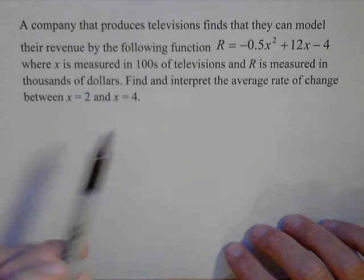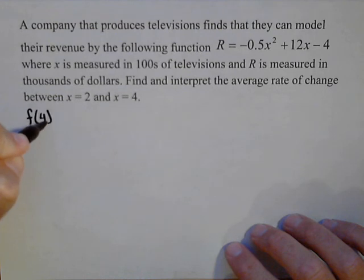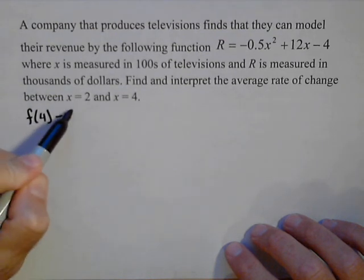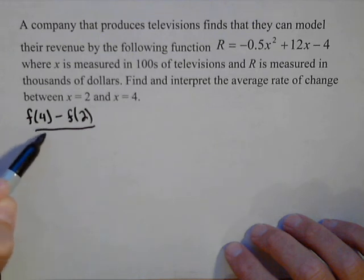Find and interpret the average rate of change between x equals 2 and x equals 4. So to compute average rate of change, we're gonna calculate our function evaluated at 4 minus our function evaluated at 2 over 4 minus 2.